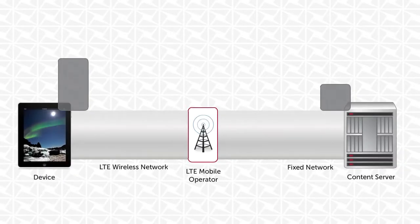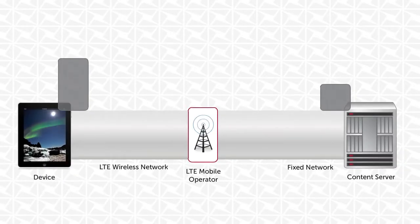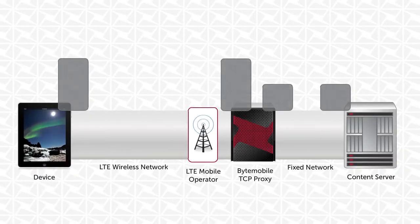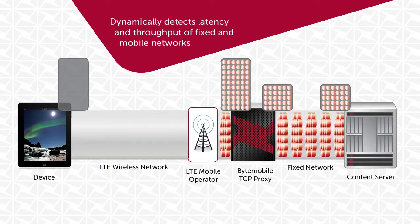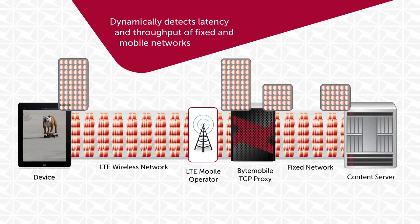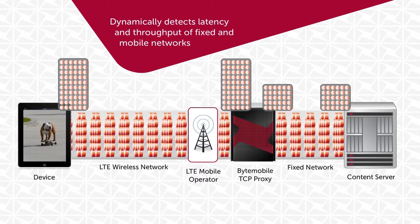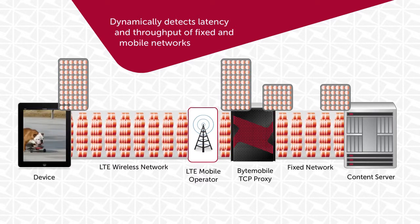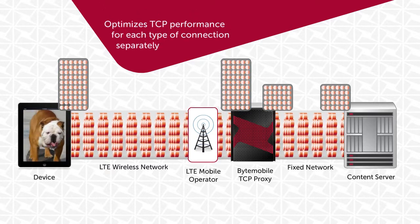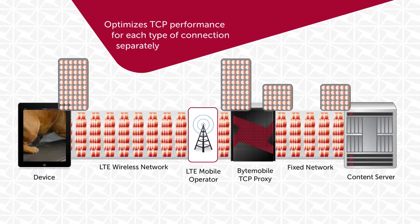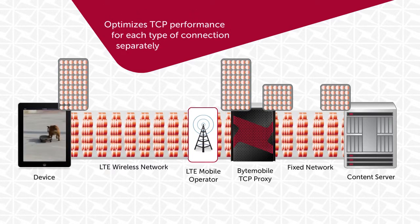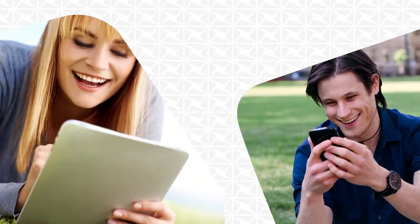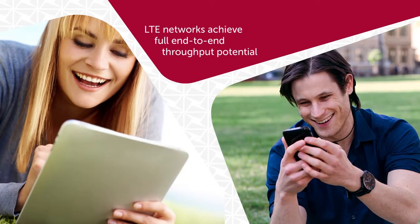Byte Mobile Solutions solve this problem by providing a TCP proxy between the mobile device and the content server. The proxy dynamically detects the latency and throughput of both the fixed and mobile networks in real time, and optimizes TCP performance for each type of connection separately. This enables the LTE network to achieve its full potential for downloading large files and streaming HD video from the mobile internet.